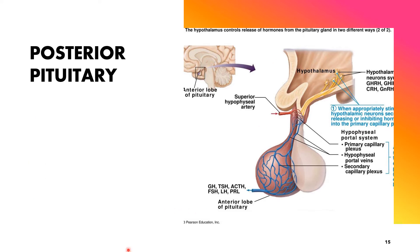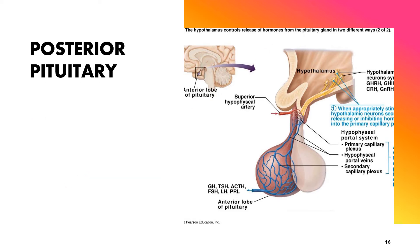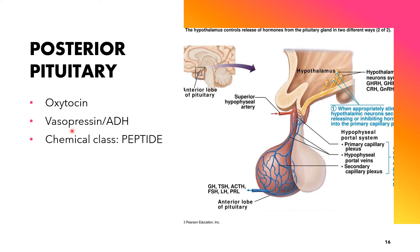The posterior pituitary, or neurohypophysis, has a neurological origin. Unlike the anterior pituitary, the posterior pituitary does not synthesize any hormones, but releases two hormones that are synthesized in the hypothalamus. These two hormones are oxytocin and vasopressin, also known as ADH or antidiuretic hormone. In terms of chemical class, these are classified as peptide hormones.